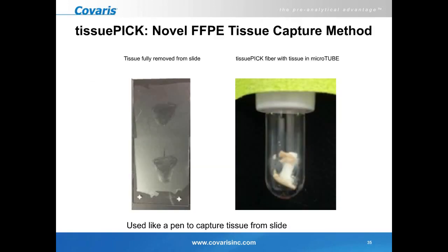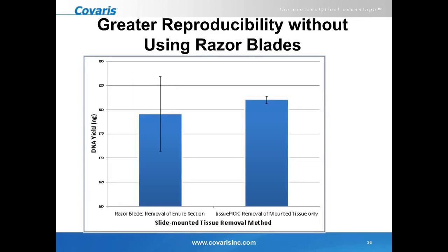The tissue pick is a novel FFPE tissue capture method that uses a porous material which, when run across a tissue section mounted on a slide, absorbs and captures the tissue. You transfer it into the microtube for processing. It is a simple and efficient method of removing selected regions from a large tissue section on a slide. As you can see on the right-hand side, tissue sections are fully removed using a single tissue pick, with a video available on our website showing how simple it is.